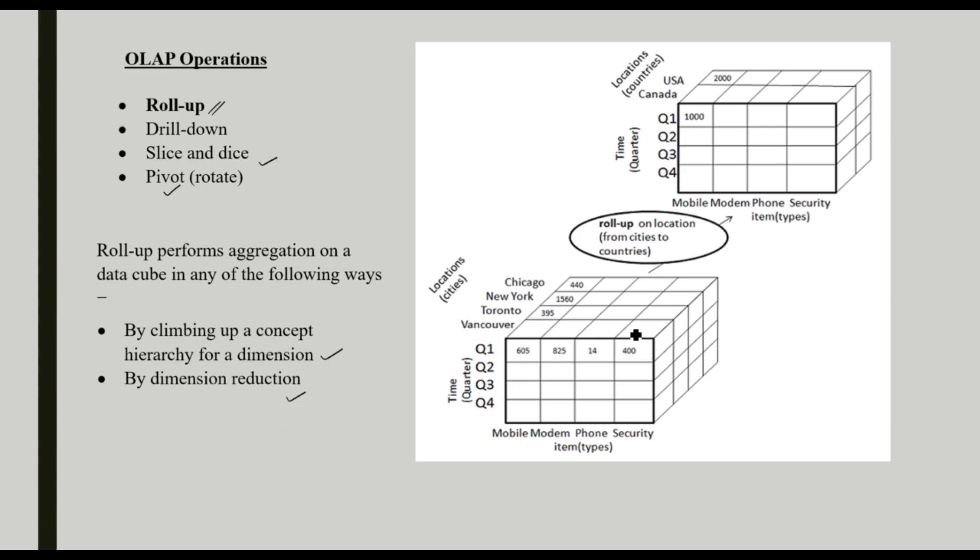This is the example for roll-up operation. This is our data cube. Here, the location and the quarter-wise details for the sale of mobile, modem, phone, and security. Quarter 1, quarter 2, quarter 3, quarter 4, we are listing the sales. Let's assume that this is city-wise. Location is here. We are the city-wise sales are there.